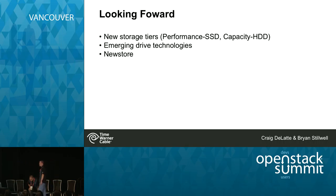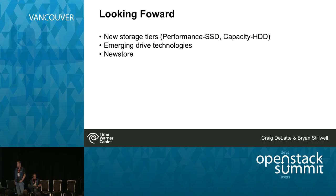Looking forward, we want to provide new storage tiers — a performance all-SSD cluster and a large-capacity spinning-disk cluster. We're investigating emerging drive technologies like NVMe drives and Ethernet-attached drives, and watching where NewStore goes, which may reduce reliance on journals.